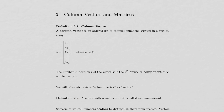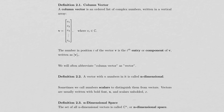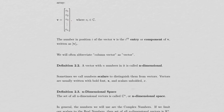We start with column vectors and matrices. We define a column vector to be an array of complex numbers. The vector v is written v1, v2, v3 down to vn with brackets around it, where v sub i is in C — in other words, these v's are all complex numbers. If I want to refer to one of the numbers in v, I use notation like v with brackets and subscript i, which refers to the i-th entry or component of v, or the number in position i.